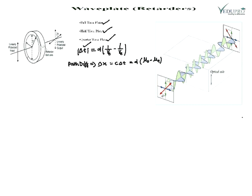Now, what is a half wave plate? The half wave plate is also a double refracting crystal. The refracting faces of this crystal are cut parallel to its optic axis. Its thickness t is set such that it produces a path difference of λ/2.